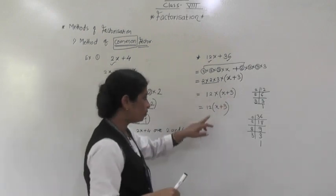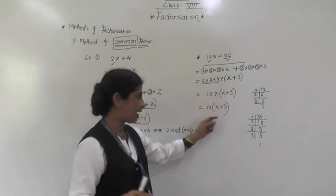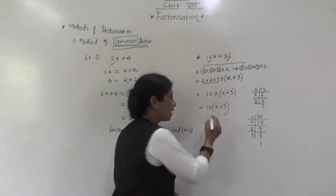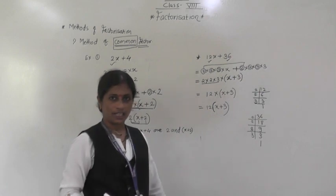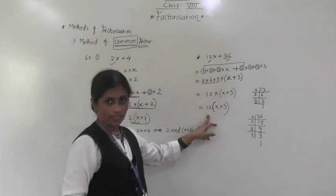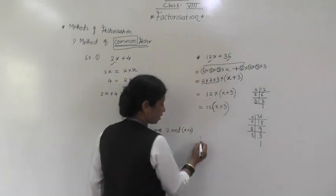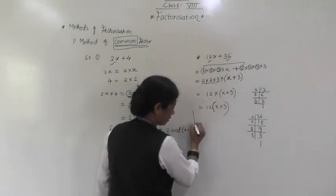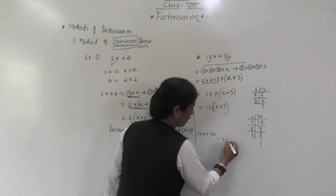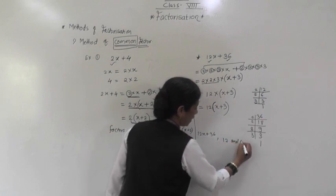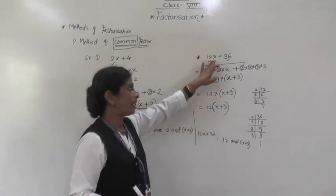So 12(x + 3): 12 × x = 12x, and 12 × 3 = 36. Both numbers have 12 as a common factor. So the factors of 12x + 36 are 12 and (x + 3).